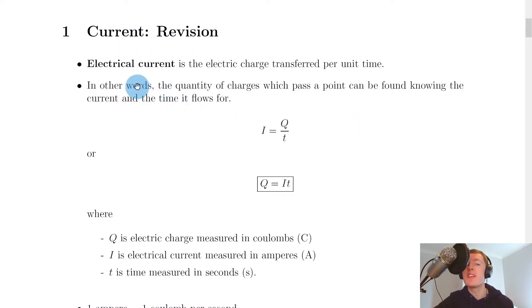First of all, we'll look at the definition for electrical current. So we define electrical current as the electric charge transferred per unit time. Or in other words, we can say the quantity of charges which pass a point can be found knowing the current and the time that it flows for.